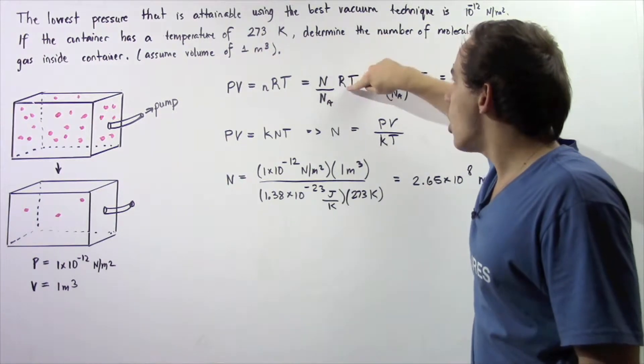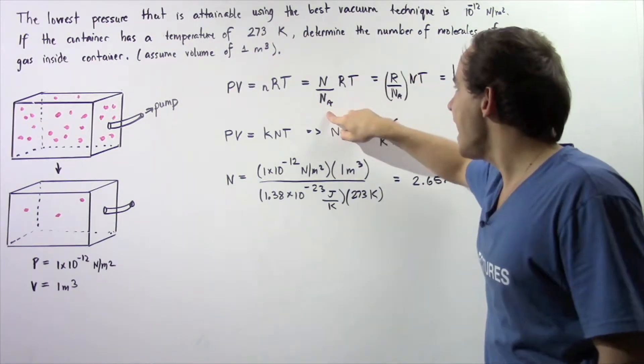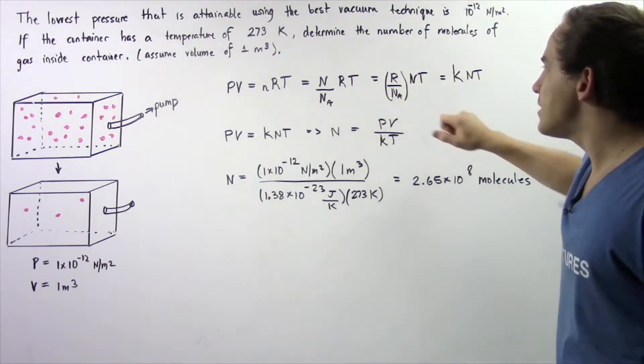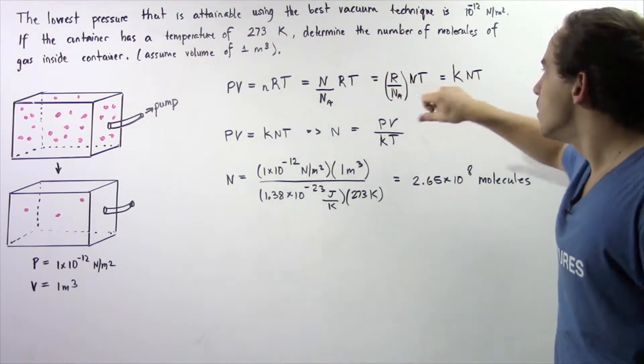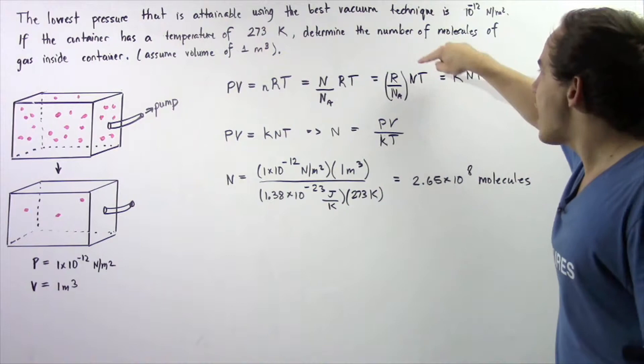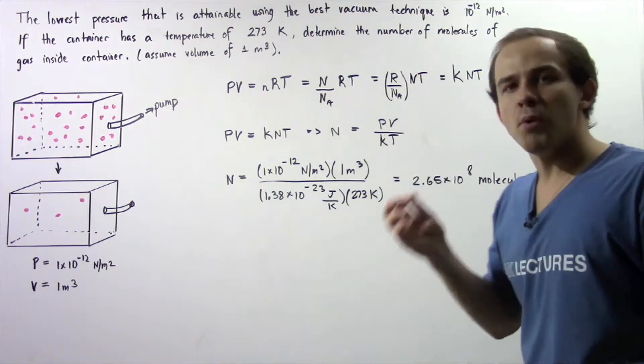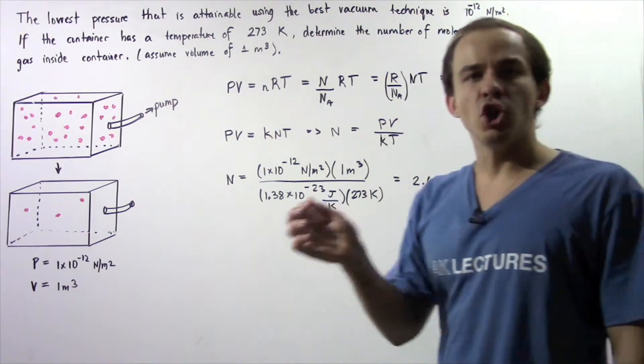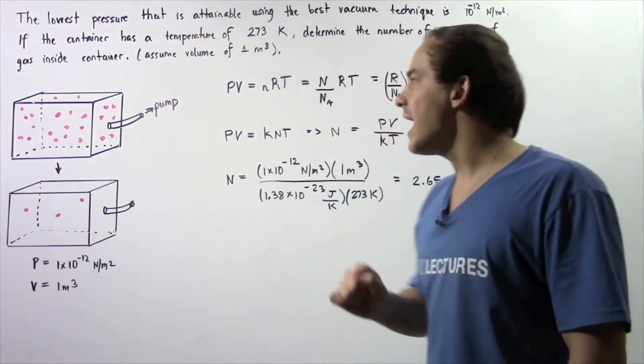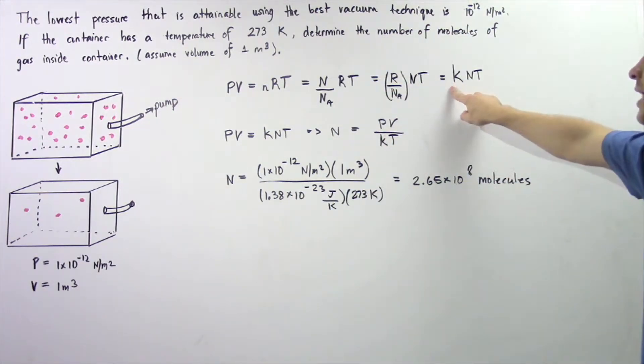So if we take R and divide it by N_A, we get the following ratio R divided by N_A multiplied by N multiplied by T. Now R and N_A are both constants and this ratio is commonly known as the Boltzmann constant given by the letter k.